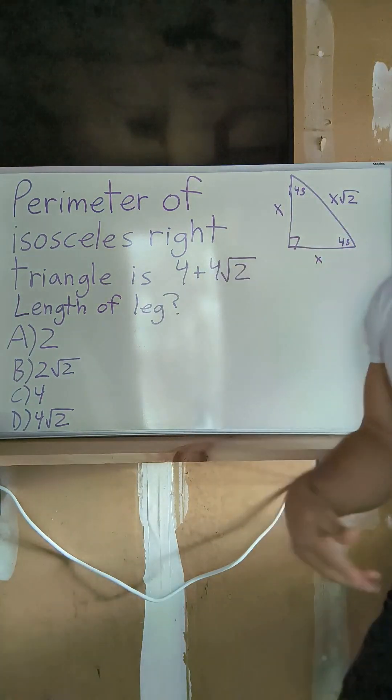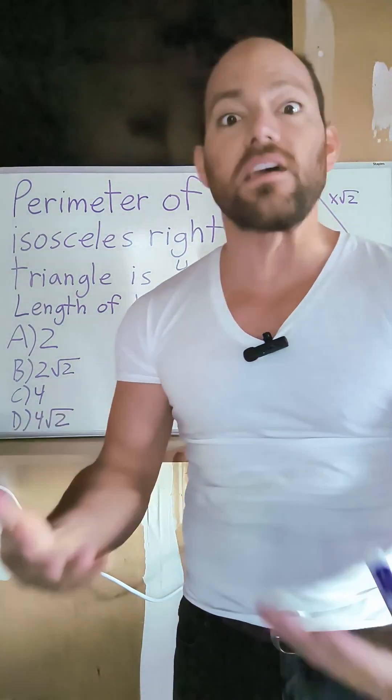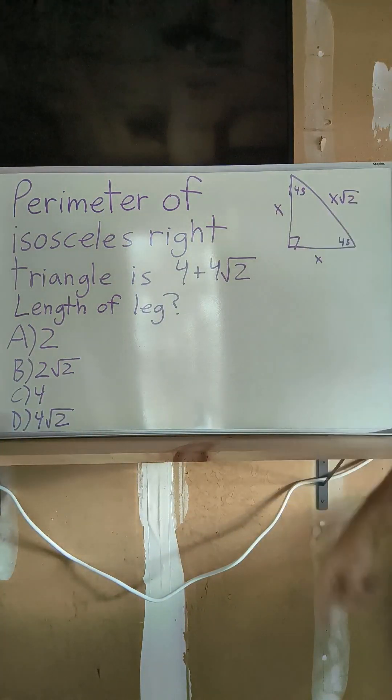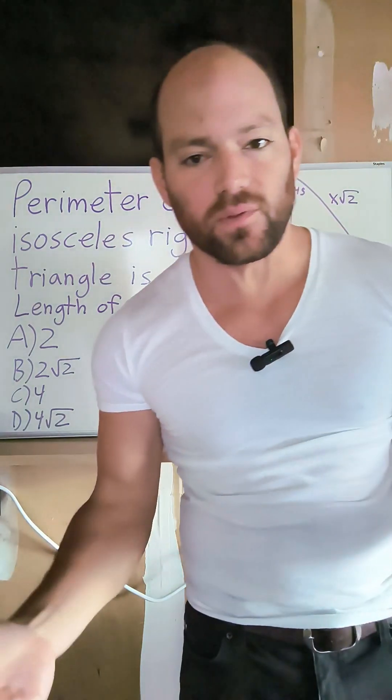So we think 45-45-90. They even are nice enough to give that stuff to us on the test. So we think, oh, x, x, x root 2. That's how a 45-45-90 works.